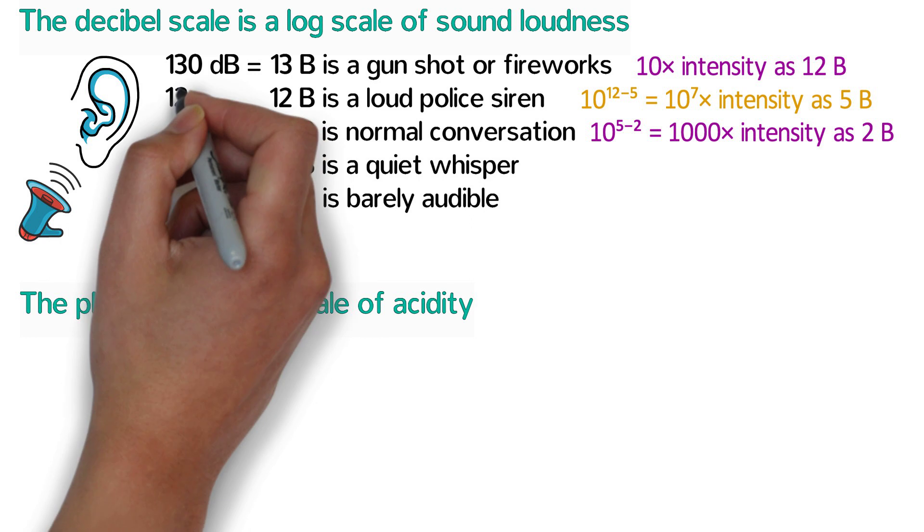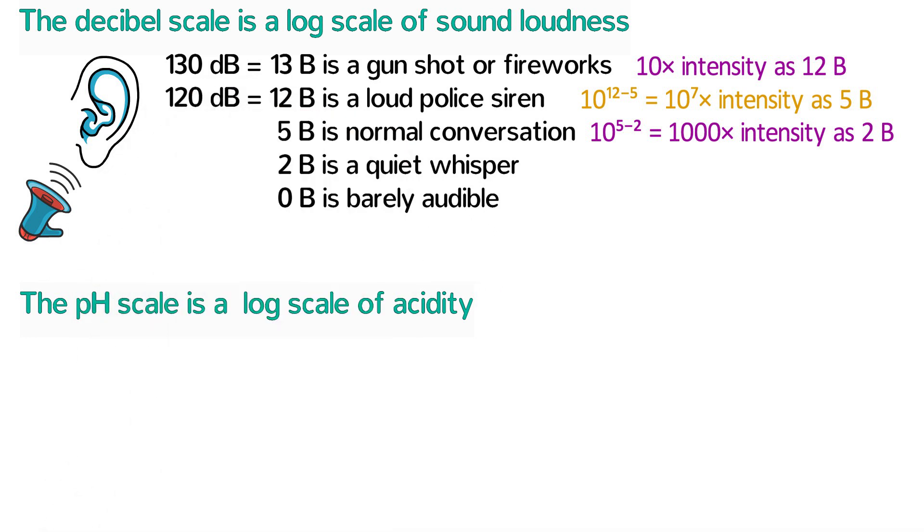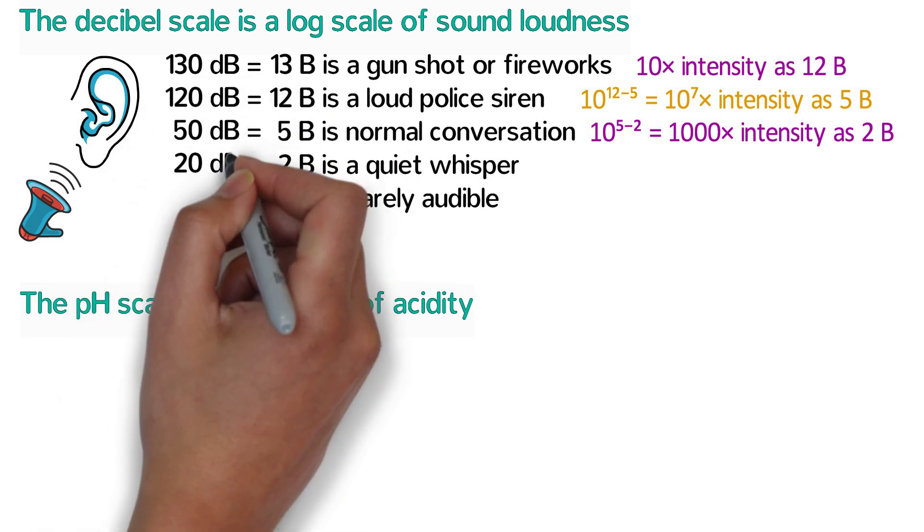Twelve bells is a hundred and twenty decibels, five bells is fifty decibels, and two bells is twenty decibels.